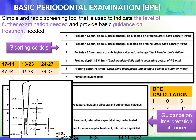When the patient comes and you begin the BPE index, you divide the entire dentition into 6 sextants: tooth numbers 17–14, 13–23, 24–27, 34–37, 43–33, and 47–44. After analyzing a sextant with the probe — for example, tooth numbers 17 to 14 — if there are no pockets less than 3.5 mm, no calculus or overhangs, and no bleeding on probing, then it falls under scoring code 0.